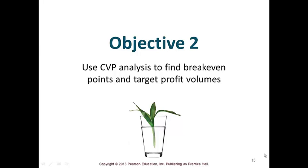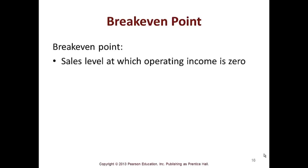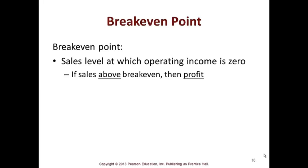Let's talk about objective two: use CVP analysis to find break-even points, because that's really what you want to know — where do you break even and where do you make a profit? The break-even point is the sales level at which operating income is zero. If you're not breaking even, there's no point in producing that product from a basic standpoint. However, with a product or service mix, sometimes as long as overall you break even and make a profit, you're okay. If sales are above break even, you have a profit; if below, you have a loss.